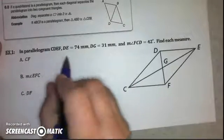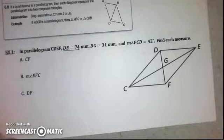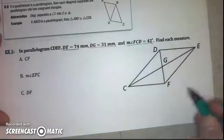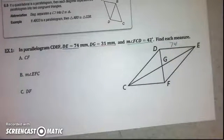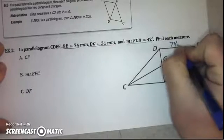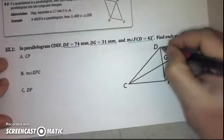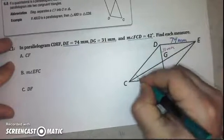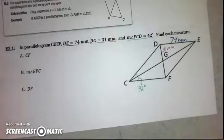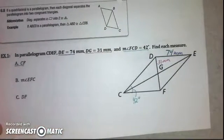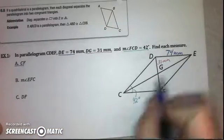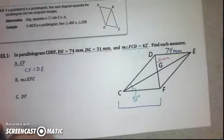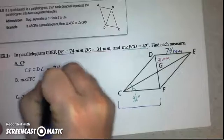We're going to work on Example 1. We are given that DE is 74 millimeters, DG — part of the diagonal — is 31 millimeters, and the measure of angle FCD is 42 degrees. The first thing we're going to find is the length of CF. The reason we're given DE is so we can find CF, because it is the opposite side. Since opposite sides are congruent, CF is also 74 millimeters.